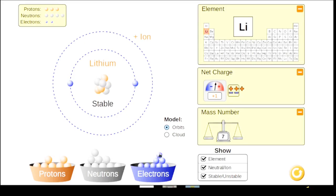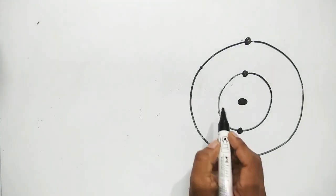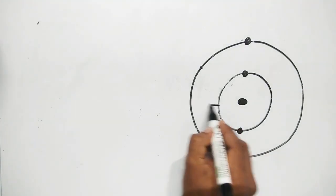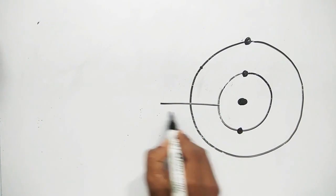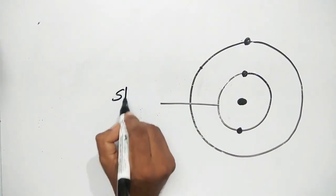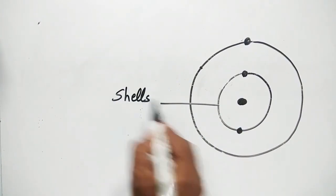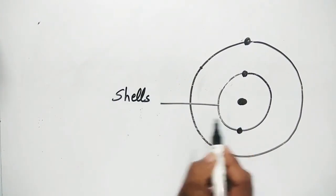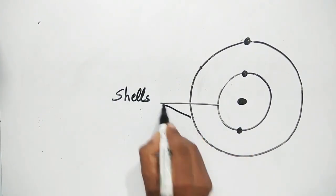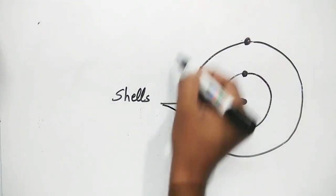Now we have electrons, protons, neutrons, and atoms. What are electrons? Electrons are in fixed shells, also called orbits.